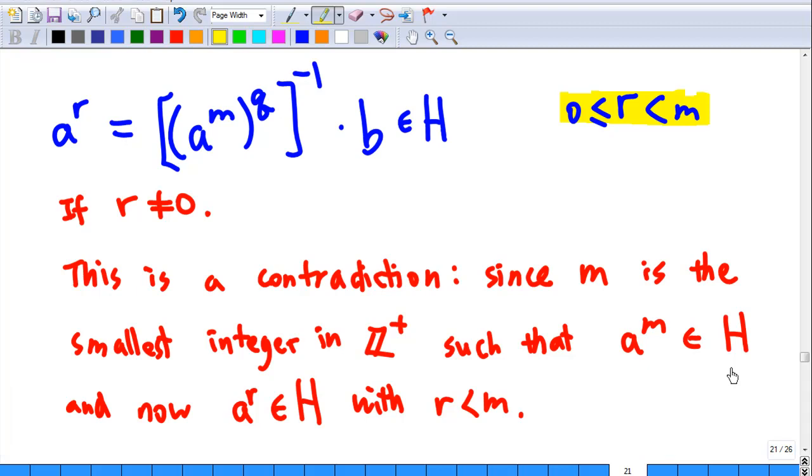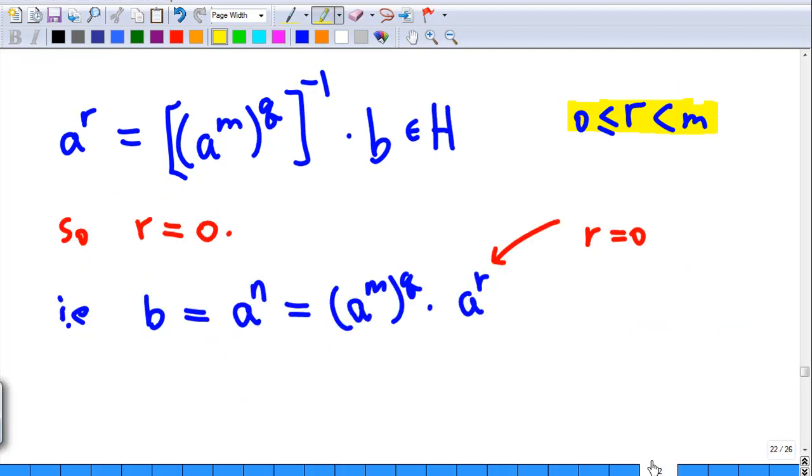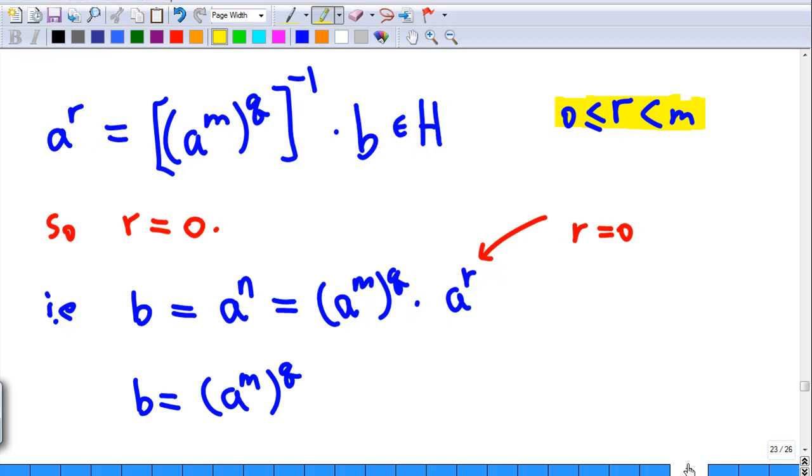Therefore, we must have r equal to zero. So if r equals zero, then b equals a power n equals a power m raised to power q times a power r with r equal to zero, which means b equals a power m raised to power q.